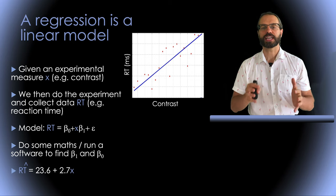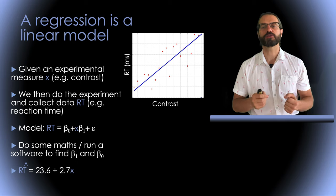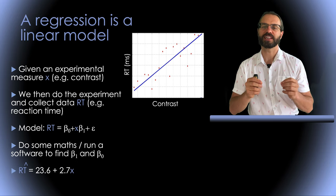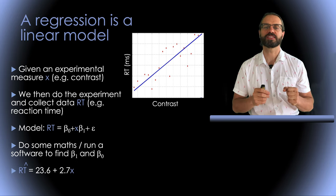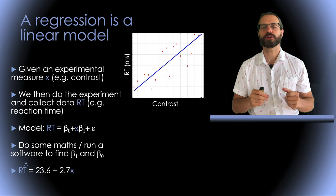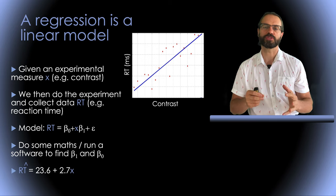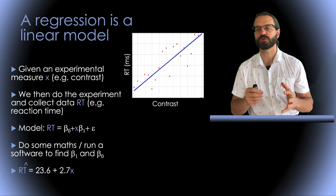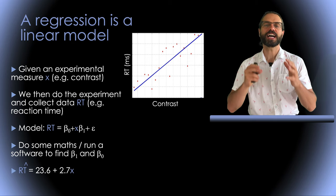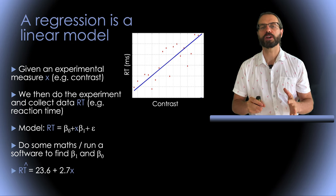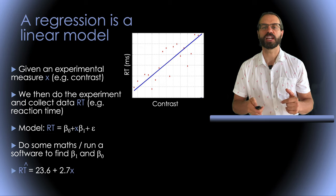We can do some simple calculation or use our preferred software to find the parameters beta zero and beta one that best satisfy this formula. Here for example we obtain a beta zero of 2.7 and a beta one of 23.6. So we have built a simple linear model which is a type of GLM.